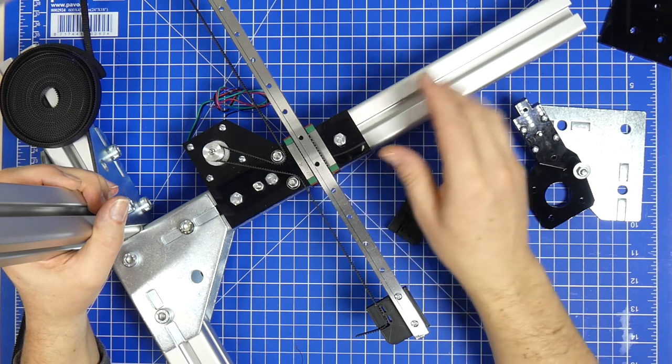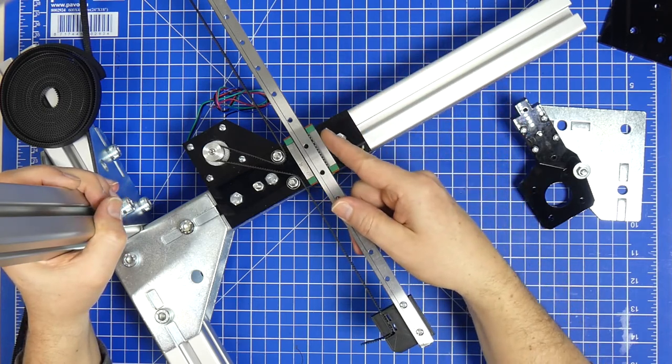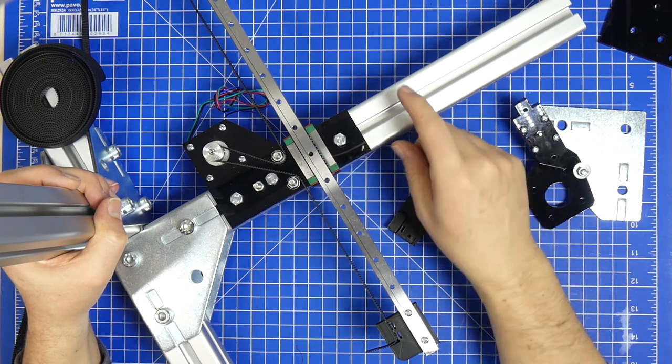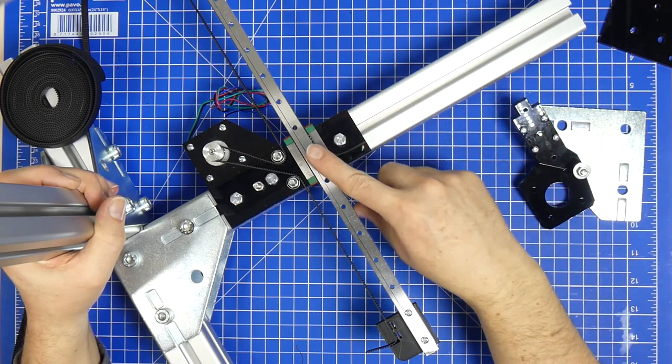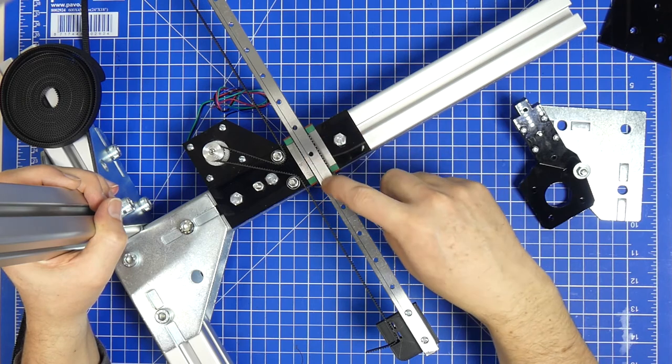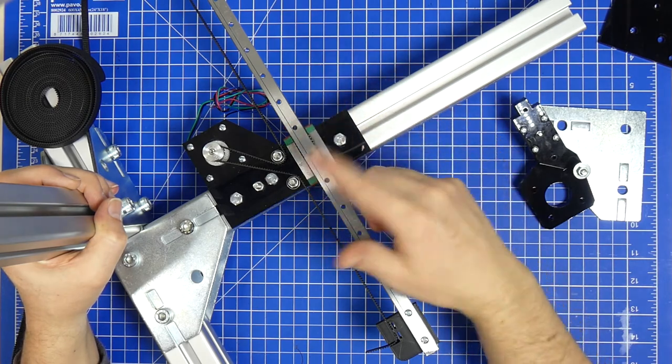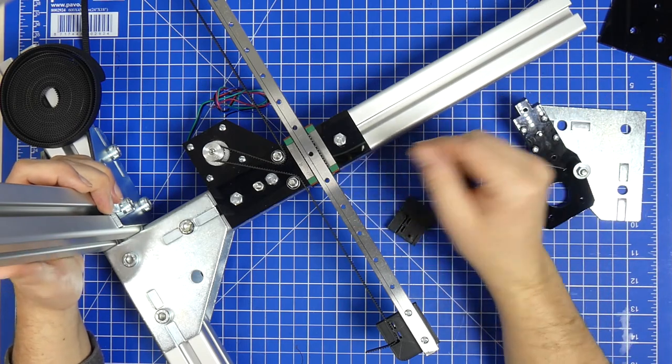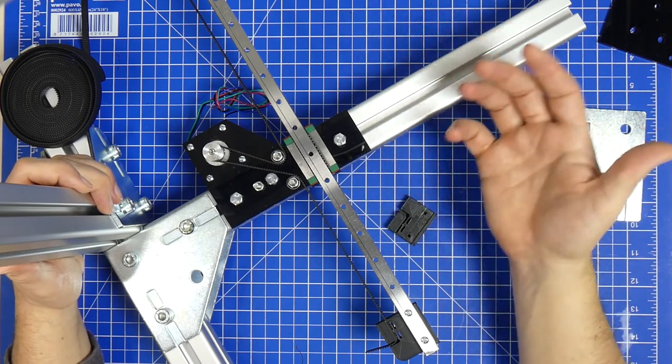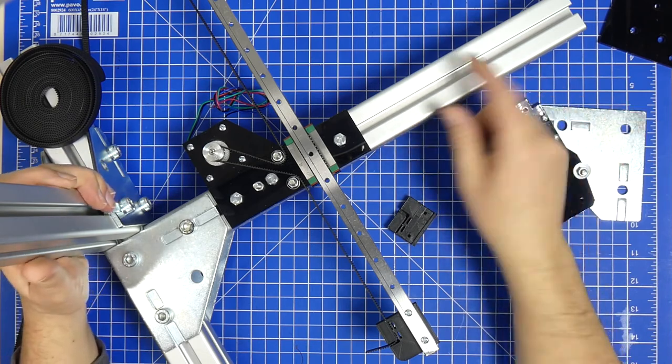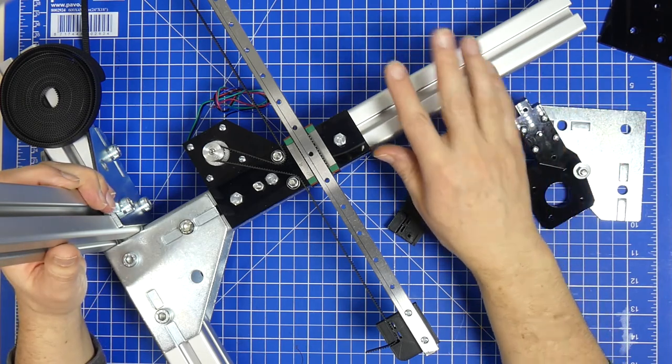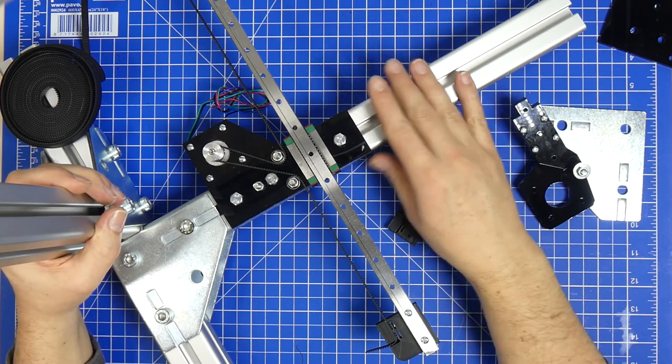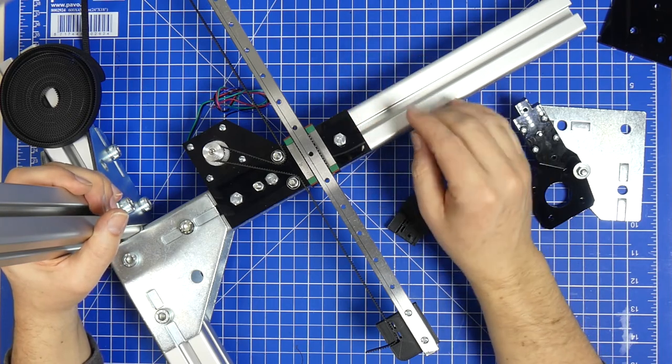But the new Trinamic driver chips, they have current detection and they can do homing without even one end switch on the system. Although I do think that I will still have one for the Z axis. Those are some of the things that are going through my mind right now. And I haven't had a lot of time to ponder them yet.